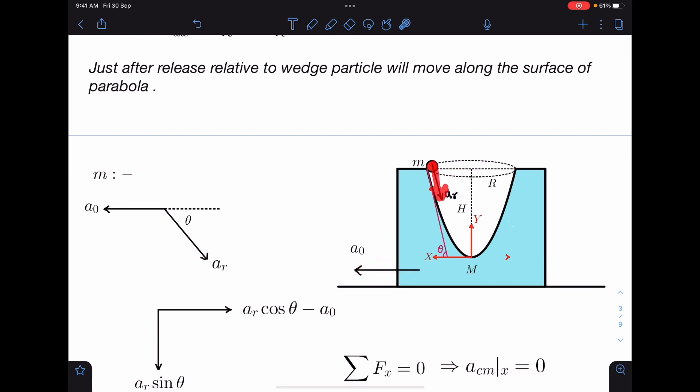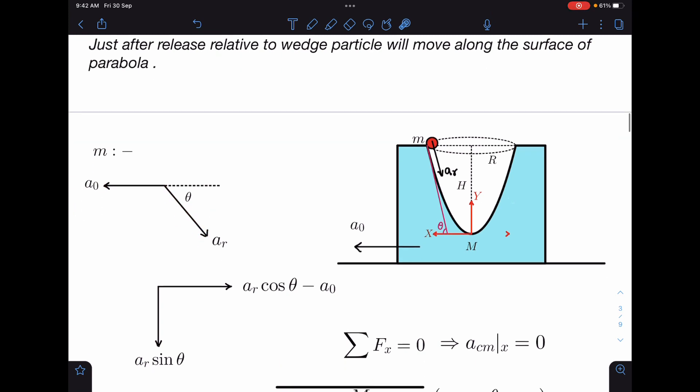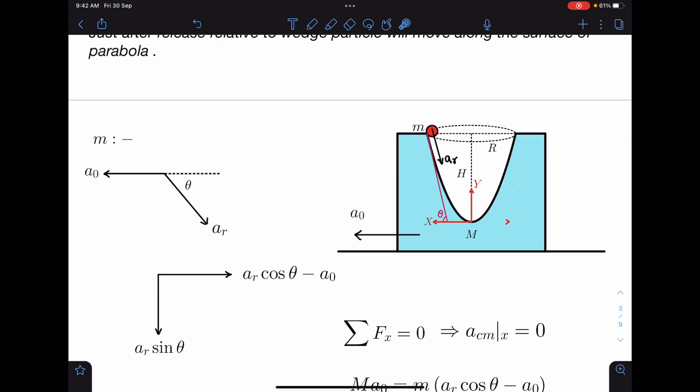With respect to ground, this acceleration of this particle will become a₀ left side and aᵣ this side. I can resolve these components here and I will be getting aᵣ net acceleration in x direction is aᵣcos θ - a₀, and in vertical direction this is aᵣsin θ.